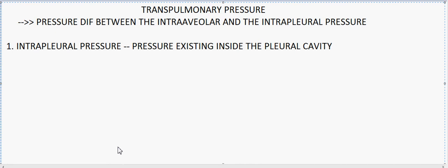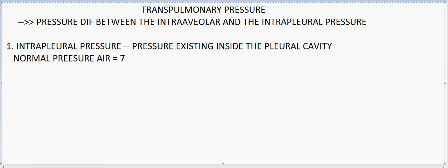Now we'll discuss how the intra-pleural pressure changes according to the respiratory cycle. The normal pressure for atmospheric air is around 760 mmHg.